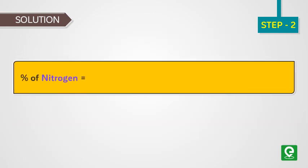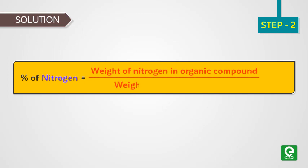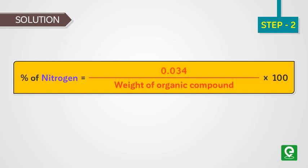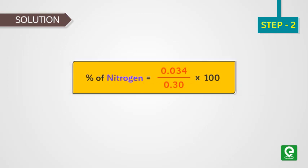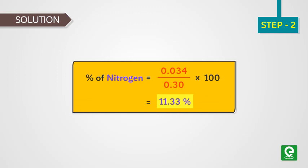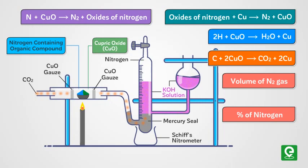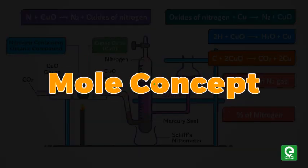Percentage of nitrogen equals weight of nitrogen in organic compound divided by weight of organic compound into 100. That is 0.034 / 0.30 × 100 = 11.33%. The calculation of percentage of nitrogen present in the organic compound using Duma's method is based on simple application of mole concept.